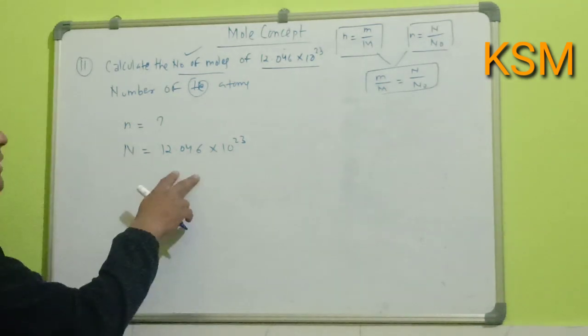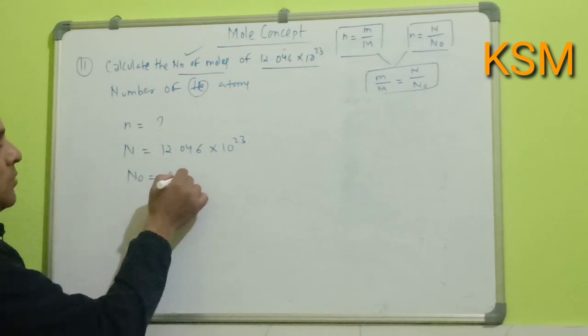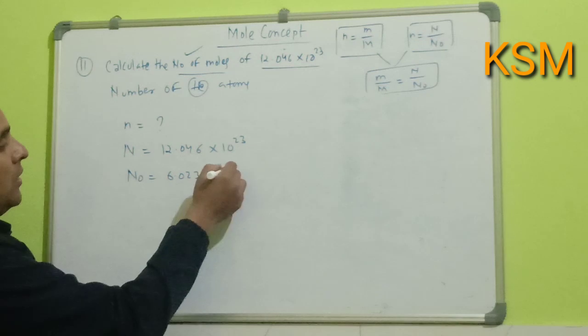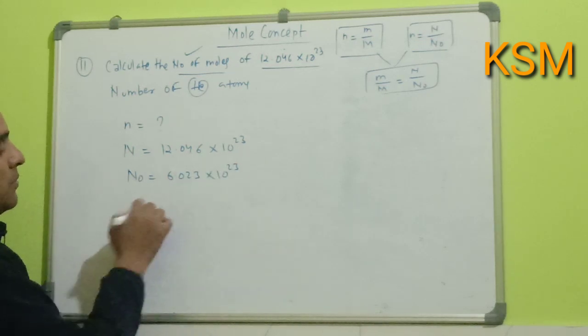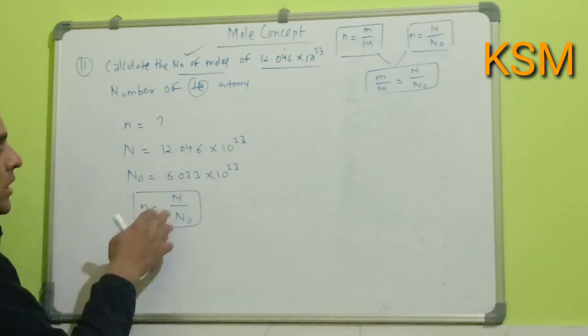We already know that N₀ (Avogadro's number) is 6.023 × 10^23. We can use the formula: small n = capital N / N₀. Now just put the values.